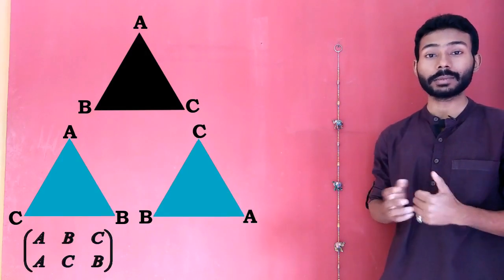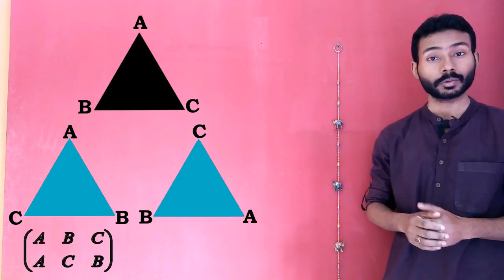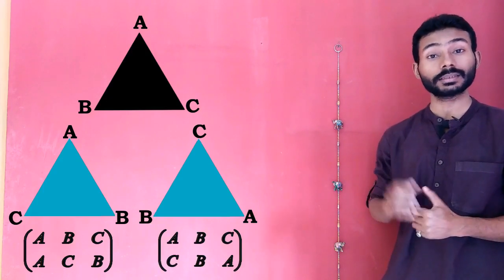Symbolically, the triangle ABC gets transformed into triangle ACB in the first case, while in the second case, the triangle ABC gets transformed into triangle CBA.